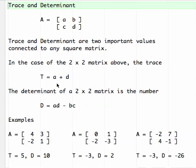We use T, capital T, as a shorthand for trace, and capital D as a shorthand for determinant. These values are very, very important.